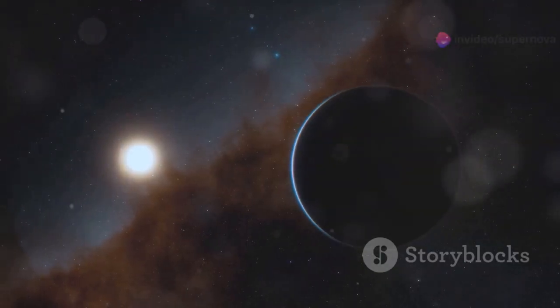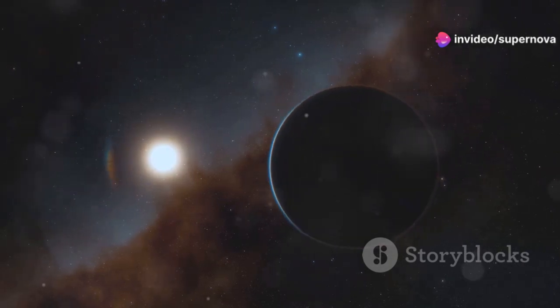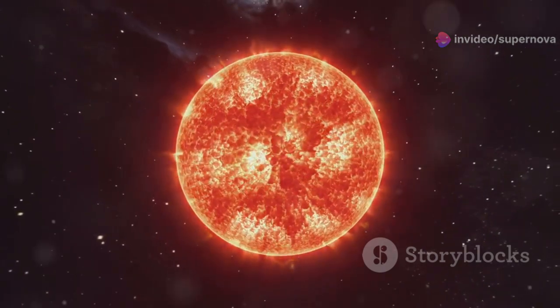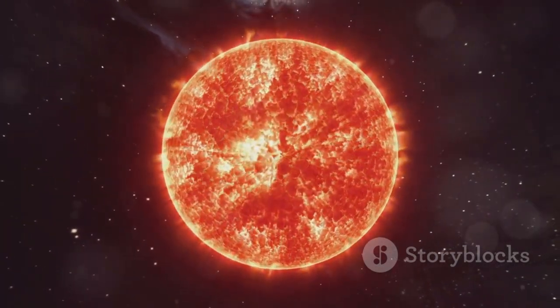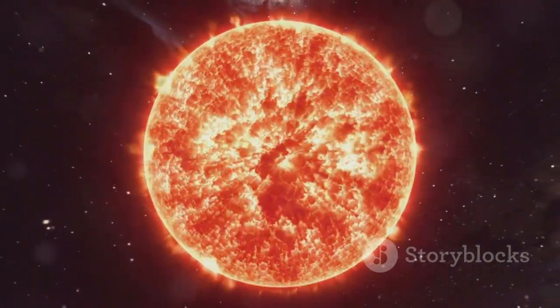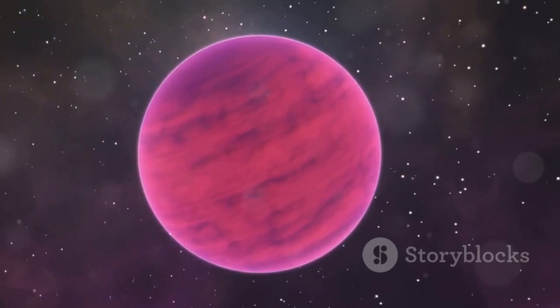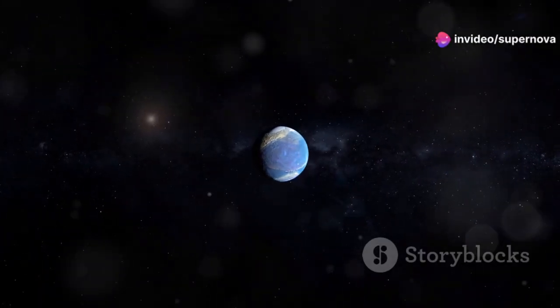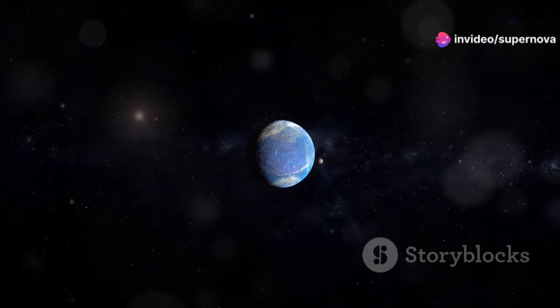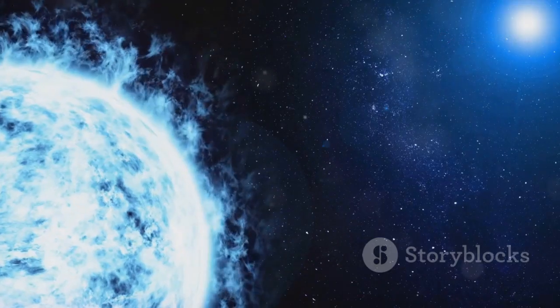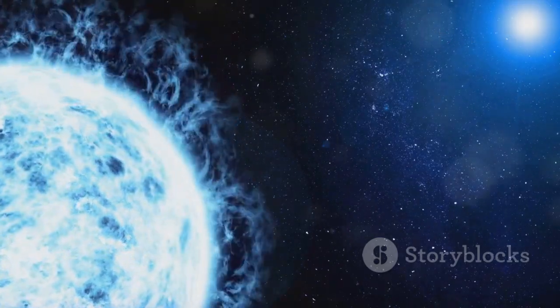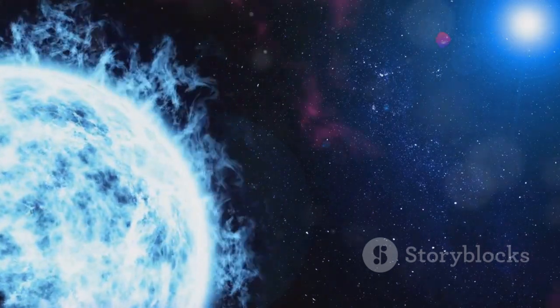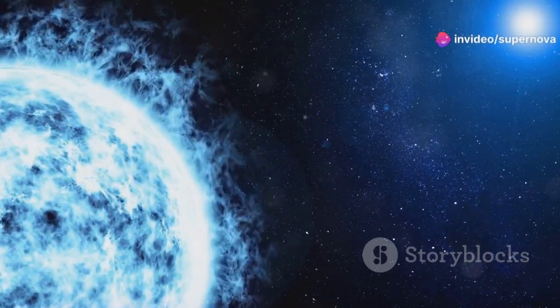Proxima b orbits a red dwarf star, much smaller and cooler than our sun. Red dwarfs emit less light and heat, which means their habitable zones are much closer to the star. This proximity means that planets like Proxima b, which orbit very close to their stars, could still have the right conditions for liquid water. The presence of liquid water is a key factor in the search for extraterrestrial life.